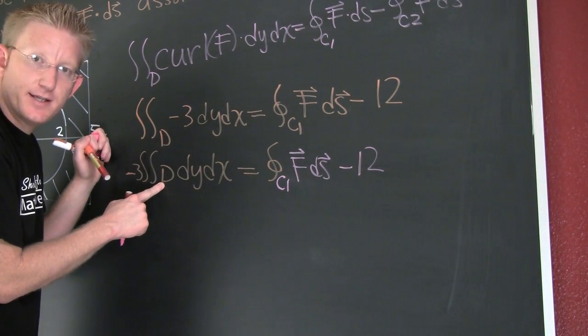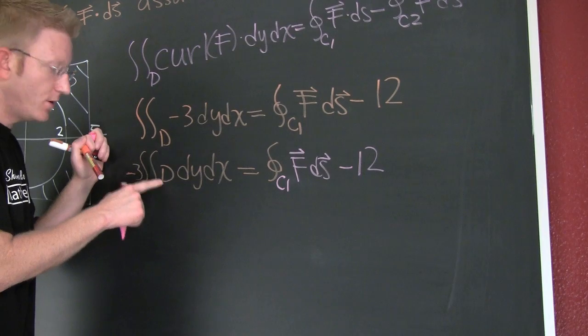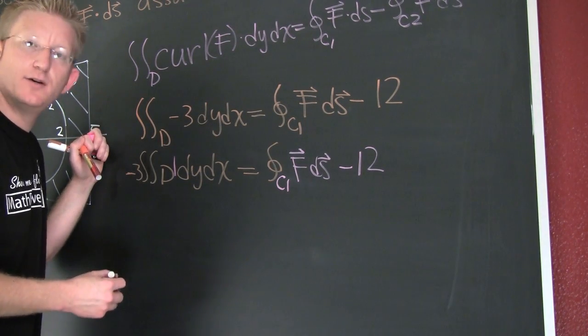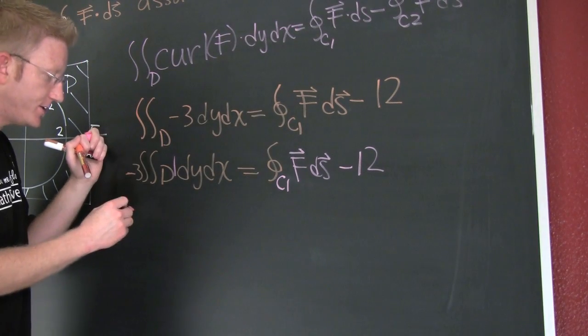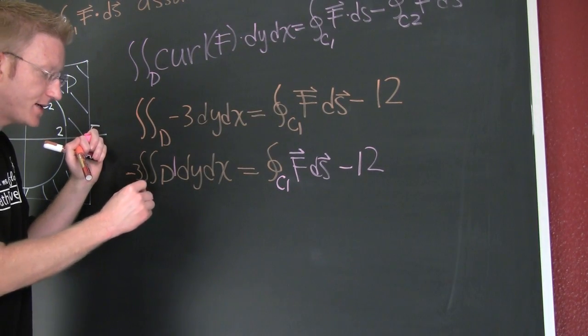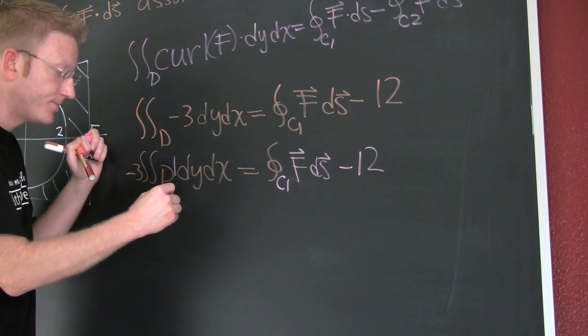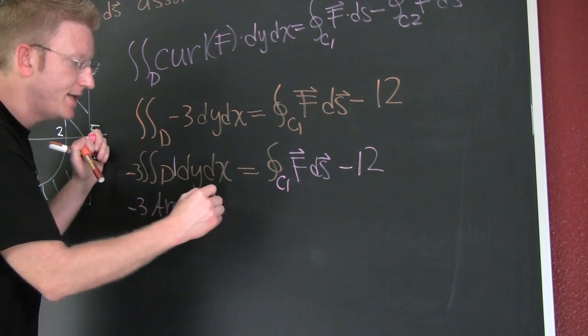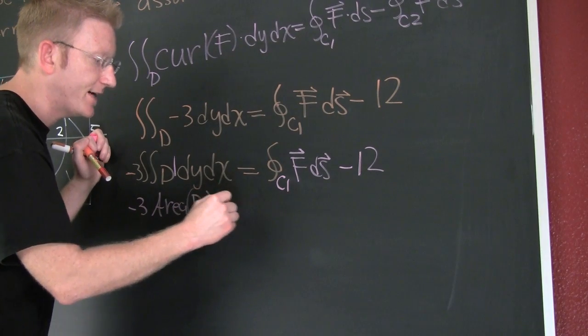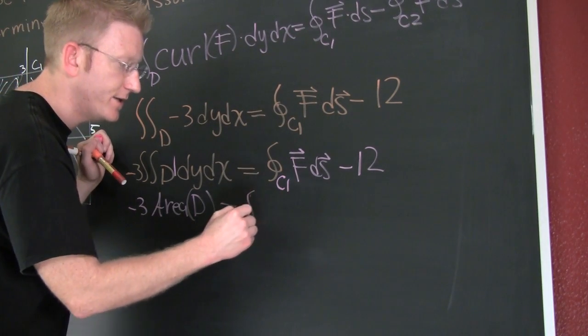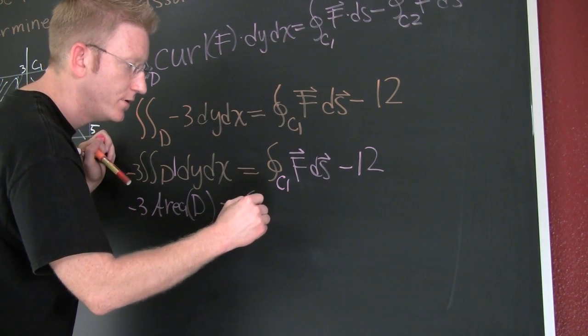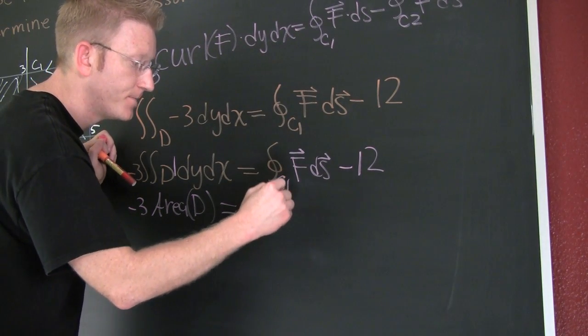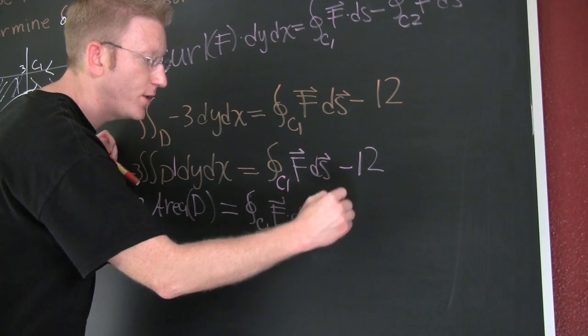If we take a look at this double integral over that domain D, we see that if that value is 1, we have the area. So this is the same as minus 3 times the area of D.